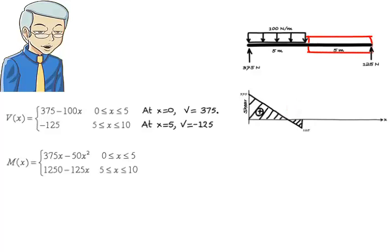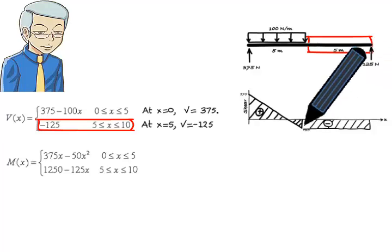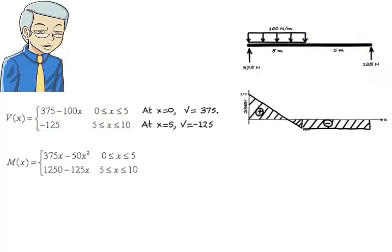For x between 5 and 10, shear is given using the equation negative 125. Since here shear is not really a function of x, it remains constant throughout the segment. So now we have the complete shear diagram for the beam.